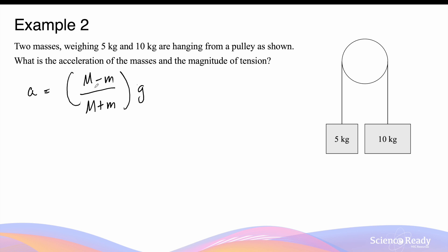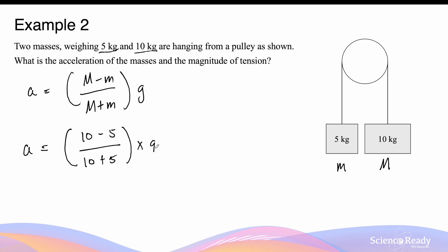Let's use the derived equation in a scenario with actual masses. We have two masses, one weighing 5 kg and another weighing 10 kg, hanging from the pulley. Capital M represents the heavier mass and small m the lighter mass. The acceleration equals (10 − 5) / (10 + 5) × 9.8, giving a value of 3.27 meters per second squared. This means the 10 kg mass will accelerate downward at 3.27 m/s², while the smaller mass accelerates upward at 3.27 m/s².